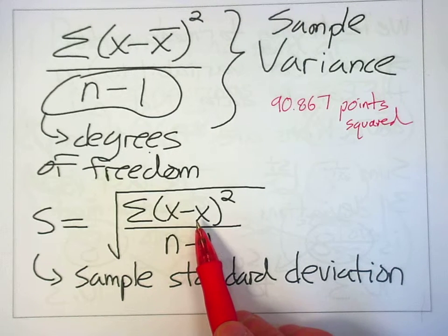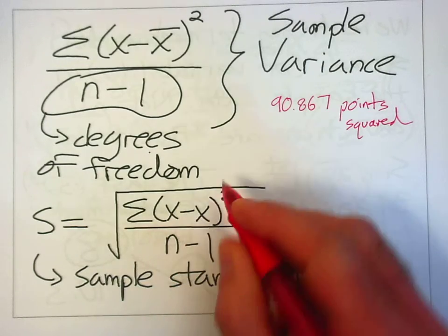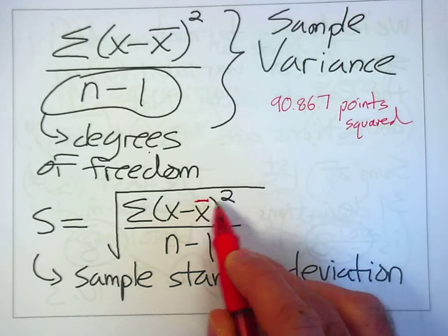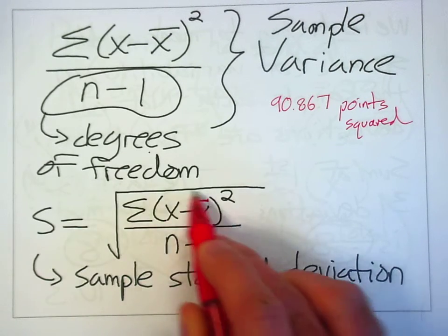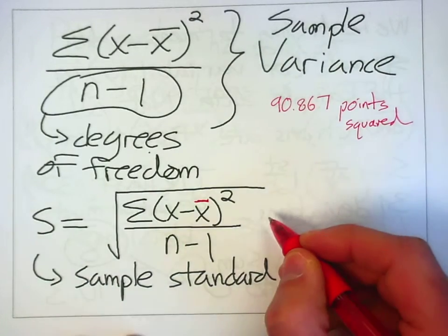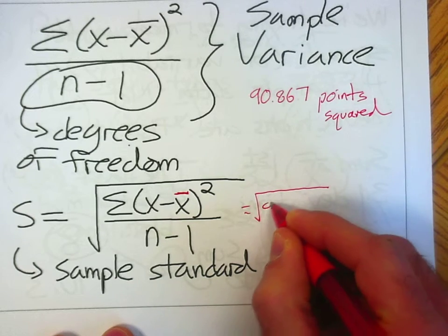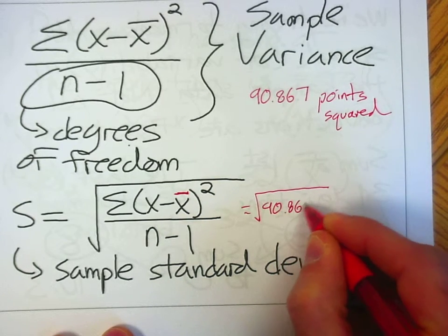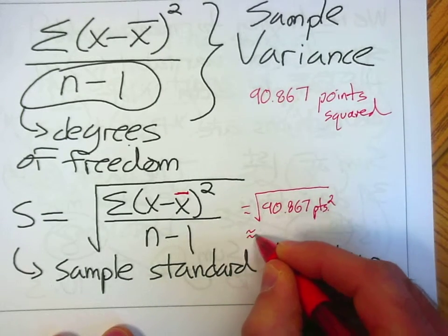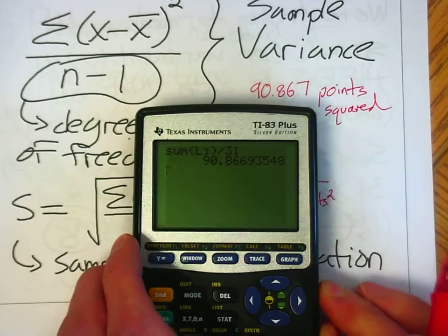And notice, in class, I made a mistake with what I wrote on the board. That's not a deviation. It needs to be x minus x bar, deviation squared. I took the sum and divided by n minus 1. That's the sample variance. When I take the square root of it, notice what I'm going to do. Literally, I'm taking the square root of 90.867 points squared. So the result is, instead of squared points, I'm going to get plain points. That's exactly what I want.